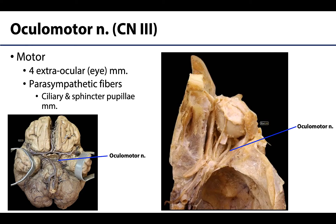Cranial nerve 3, the oculomotor nerve, is entirely motor with no sensory fibers. It sends somatic motor fibers to four of the six extraocular eye muscles — all except the superior oblique and lateral rectus, which are innervated by different cranial nerves. Importantly, the oculomotor nerve also carries preganglionic parasympathetic fibers that synapse in the ciliary ganglion for innervation of the ciliary body — involved in accommodation — and the sphincter pupillae muscle, which constricts the pupils.